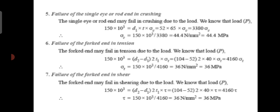Failure of the fork end in tension. The fork end may fail in tension due to the load. The formula is P equal to (d2 − d1) × 2t1 × sigma T. Substituting P equal to 150 × 10³, d1 equal to 52, d2 equal to 104, and t1 equal to 40, we get sigma T equal to 36 N per mm², that means 36 MPa.